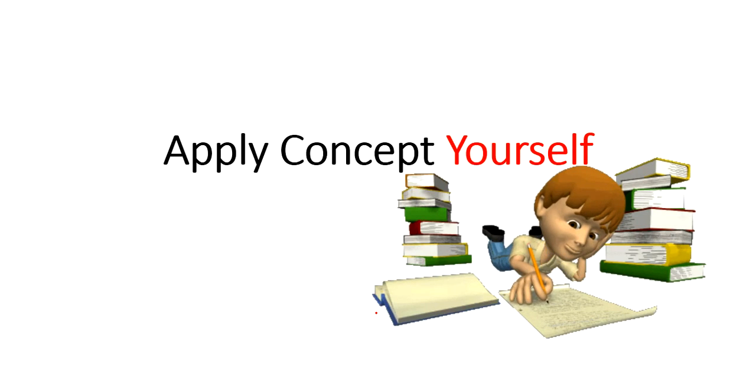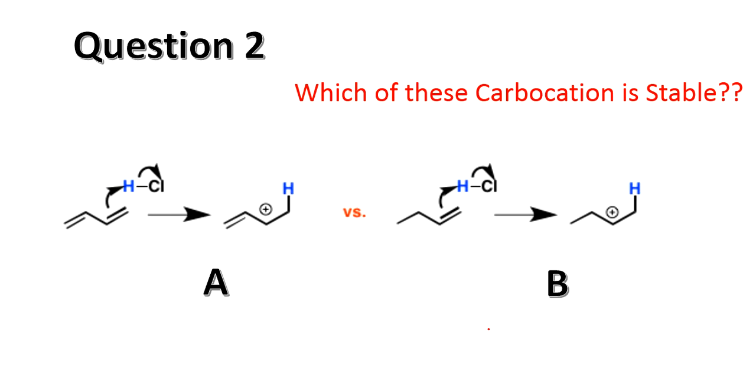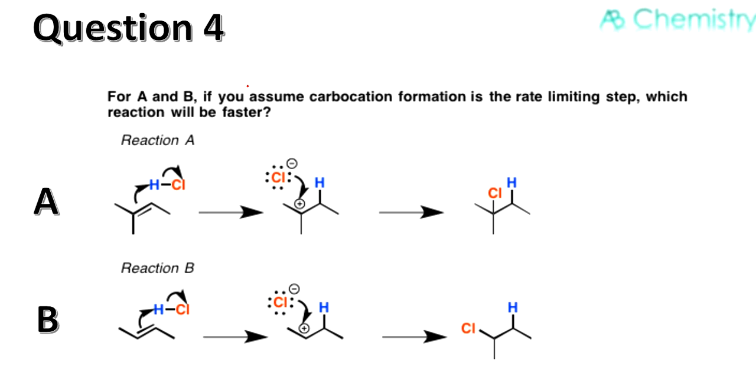So those were the three factors. Apply the concept to yourself. There are certain questions. Question number 1: which of these carbocations is stable? You can answer through the poll - whether A or B. This is the second question, also about carbocation stability - which is A or B? For the third, this is the question. The fourth question: if you assume carbocation formation is the rate-limiting step, which reaction will be faster - reaction A or B? You can attend the poll or comment below. If there are some questions, you can ask in the comments.